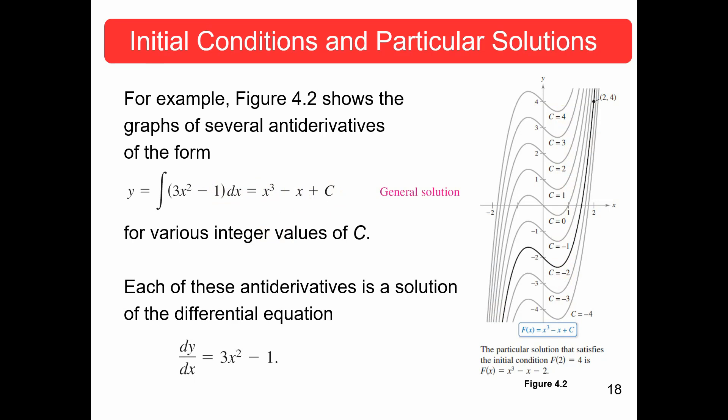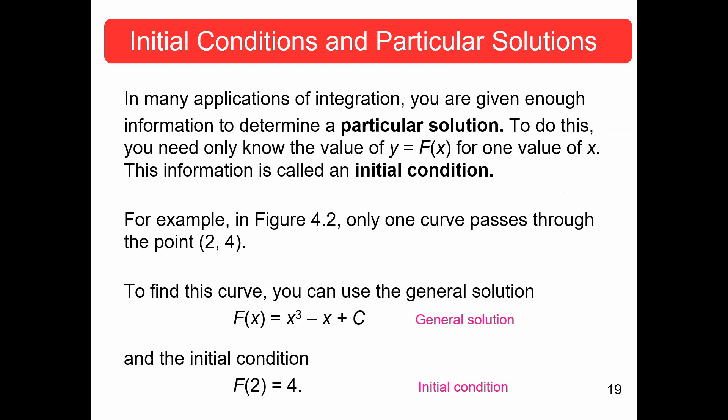The problem is we might want a particular solution. This is a general solution. So, if you are given enough information, you can find that particular solution. Now, to do this, you need to know the value of f of x for just one value of x. This is what we're going to call an initial condition.